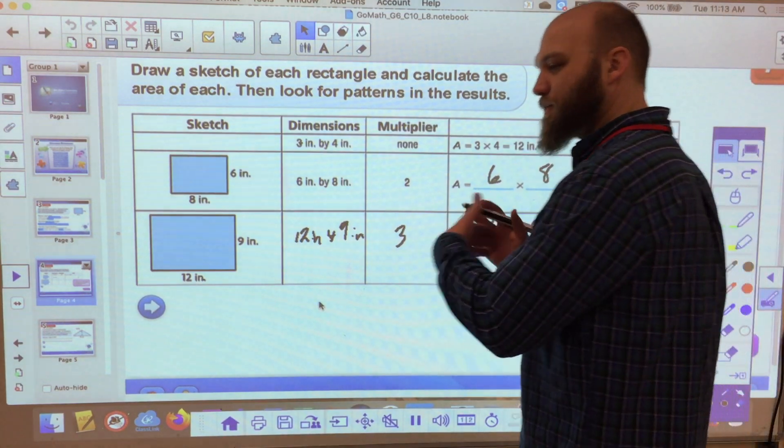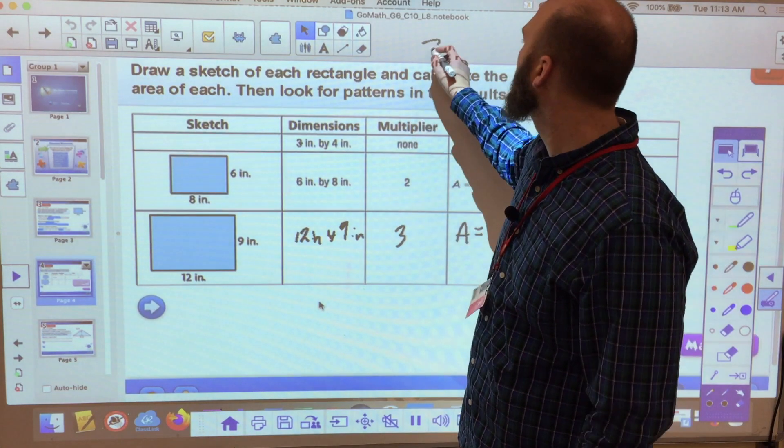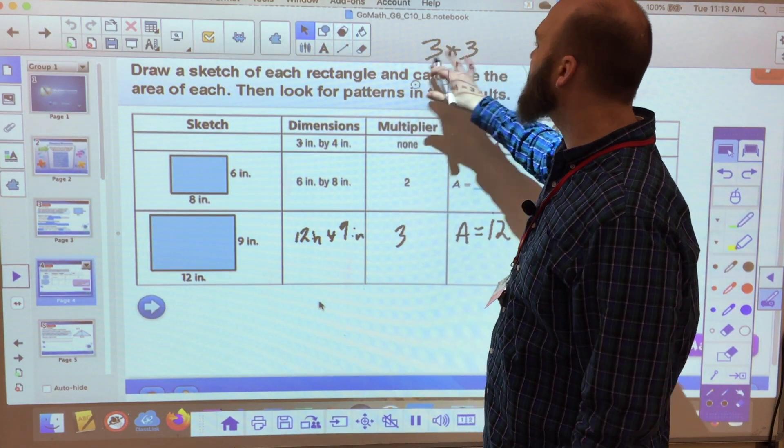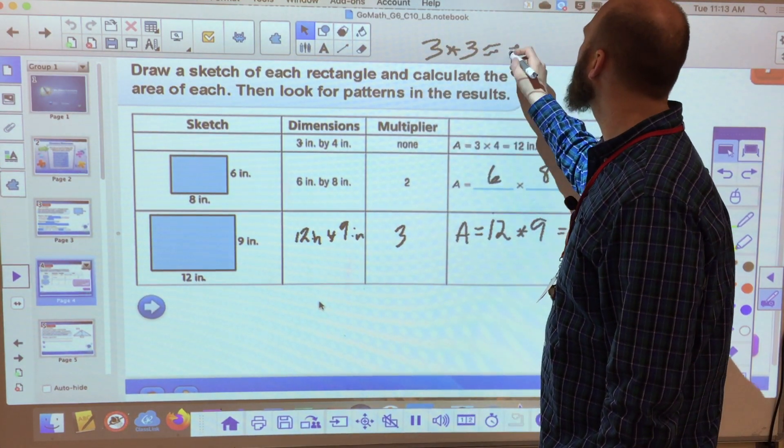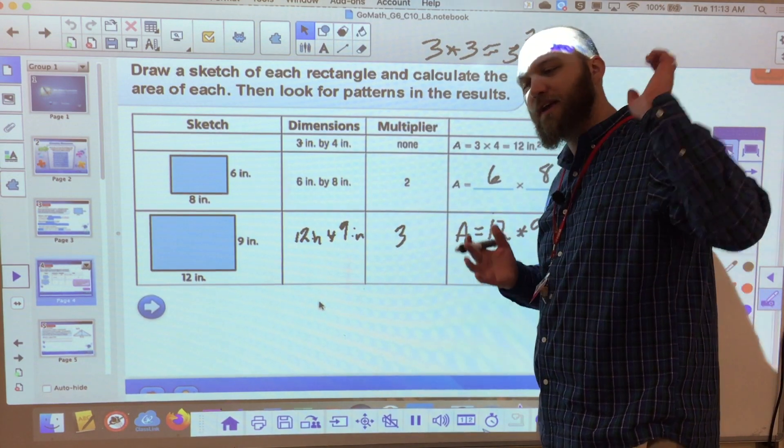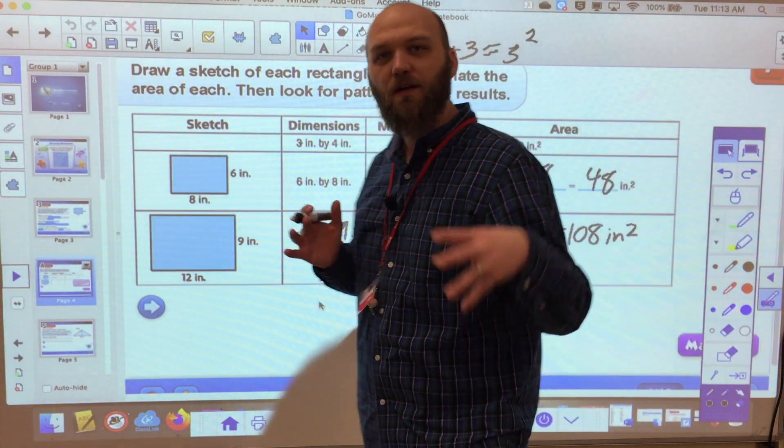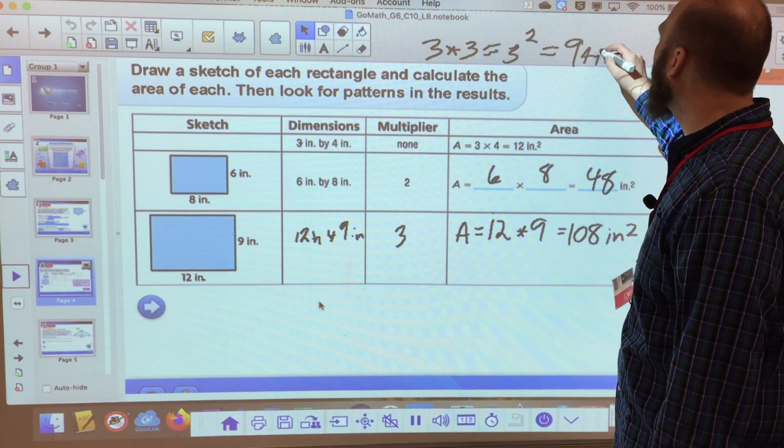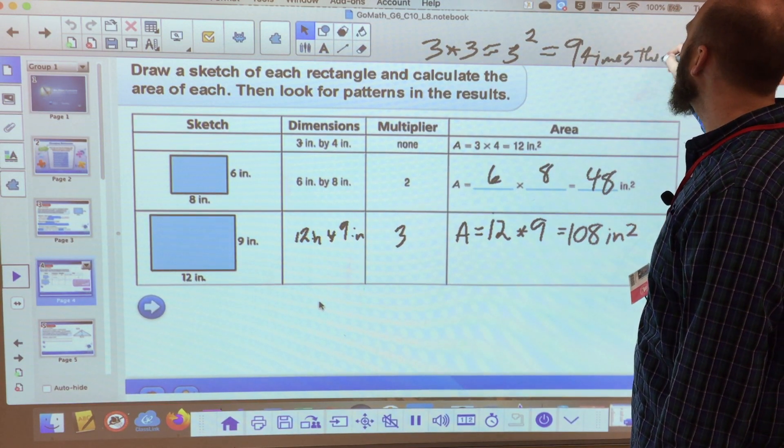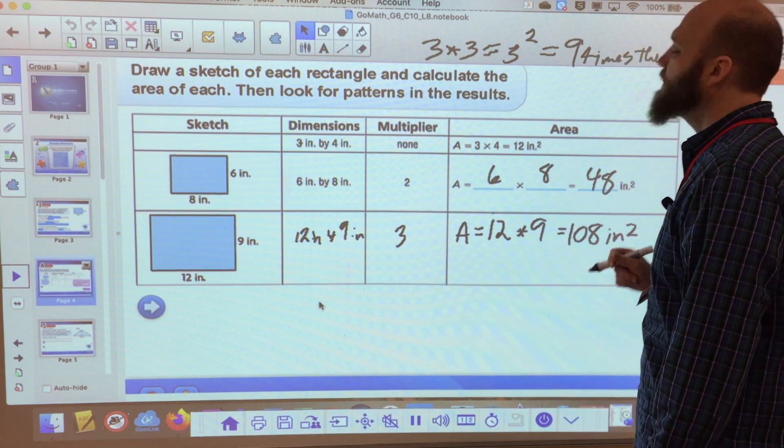So it's three times longer times three times wider, which means it is three squared. Area is squared, which means it's nine times the area.